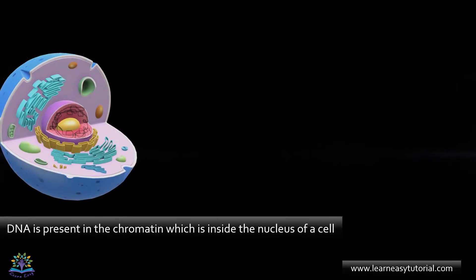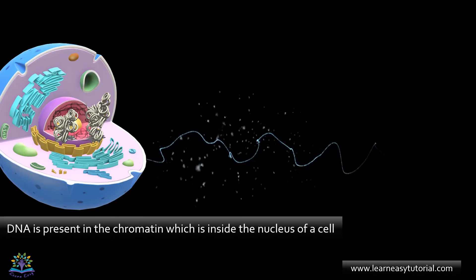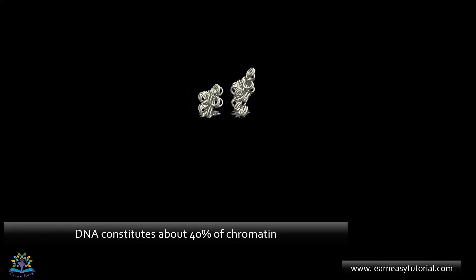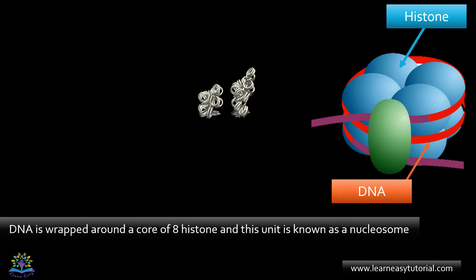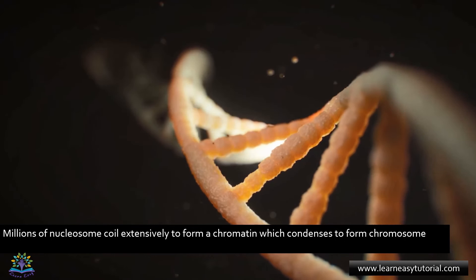DNA is present in the chromatin, which is inside the nucleus of a cell. DNA constitutes about 40% of chromatin; the remaining 60% is a protein called histone, which provides support. DNA is wrapped around a core of eight histones, and this unit is known as a nucleosome.